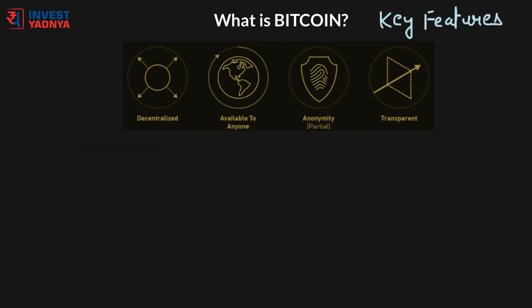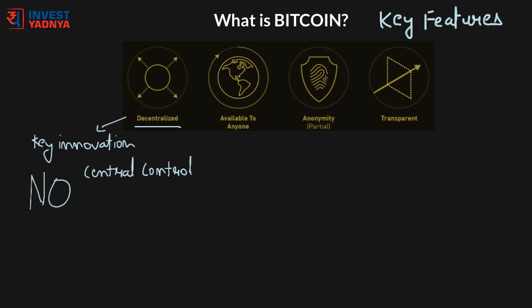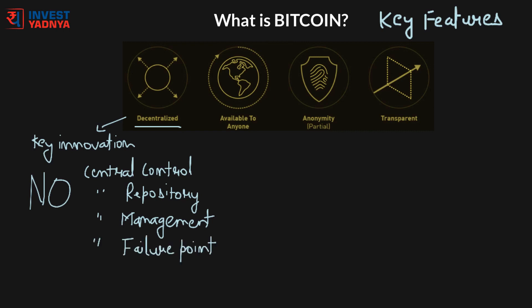The next important feature is that Bitcoin is a truly decentralized currency. One of Bitcoin's most important features — and perhaps its true core innovation — is its decentralized structure. Bitcoin has no central control, no central repository of information, no central management, and crucially no central point of failure. It is also available to everyone: to transact through Bitcoin you just need internet access, nothing else. Irrespective of your credit history or background, you can open a Bitcoin account and start transacting with anyone across the world. This is truly a global currency that gives power to the user rather than to a bank, government or credit card company.